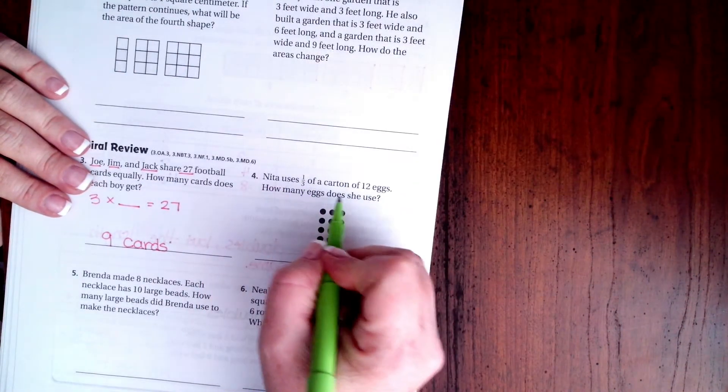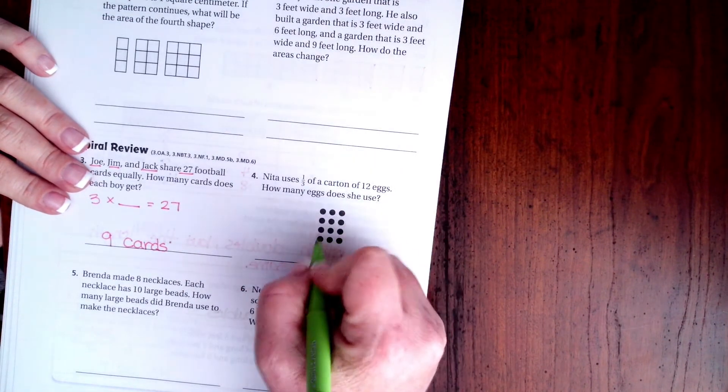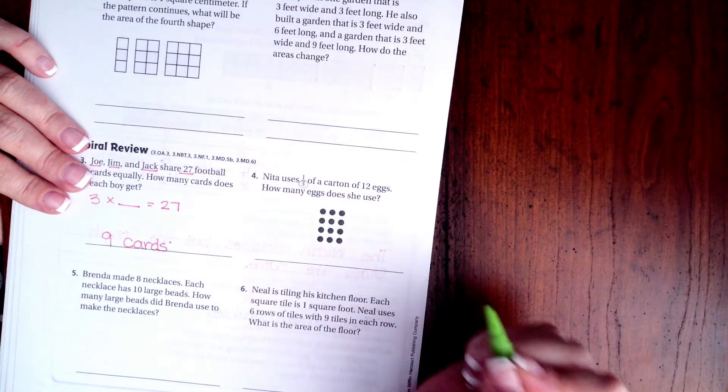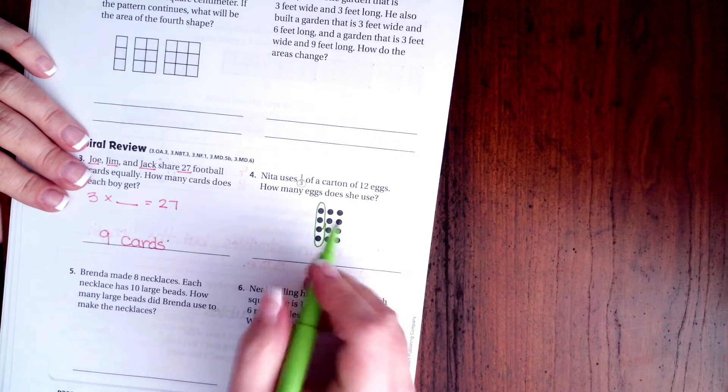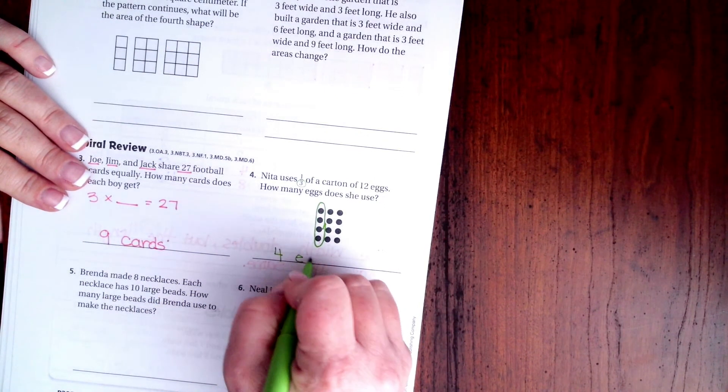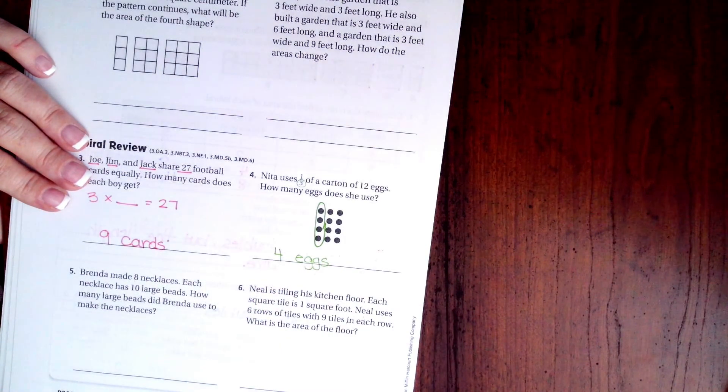Nita uses one third of a carton of 12 eggs. Notice that these are already split into three, so it's already split into that three that we need. If I need one third, then that is one two three four, four eggs. That worked out nicely.